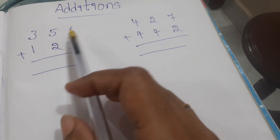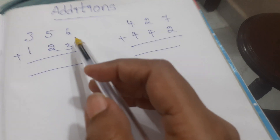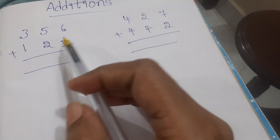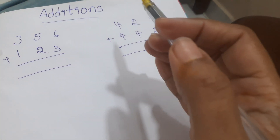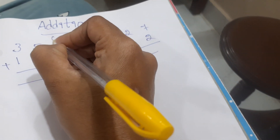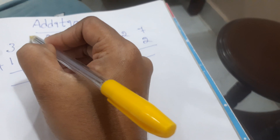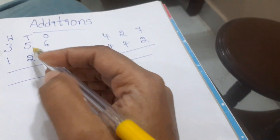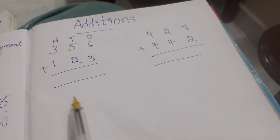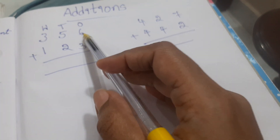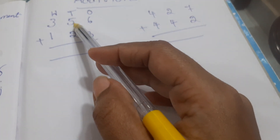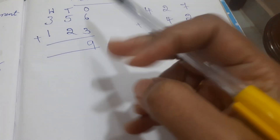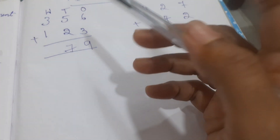First we have to add 356 with 123. Which place do you start from — left to right or right to left? From right to left, because you have to write the ones column first, next tens, next hundreds. Don't write the hundreds column first. Six plus three: six in mind, three fingers open — six, seven, eight, nine. Write nine. Next: five in mind, two fingers open — five, six, seven. Next: three in mind, one finger open — three, four.